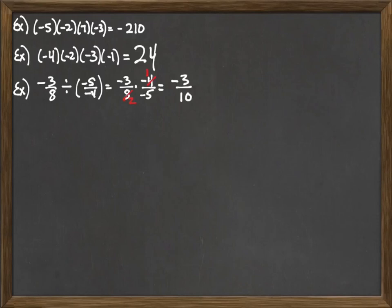So we get the answer negative 3 over 10. With multiplying and dividing all we have to do is keep track of how many negatives are involved in the multiplication or division problem.